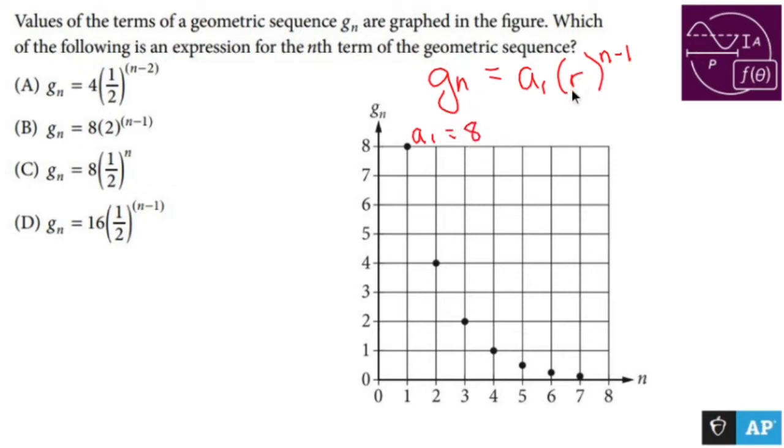Now do we know the common ratio? Kinda. We can find it out. If we go from 8 to 4 to 2 to 1, we must be multiplying by a half every time we get there. Some of you might be thinking divide by 2, but common ratio is always given to us by multiplication.